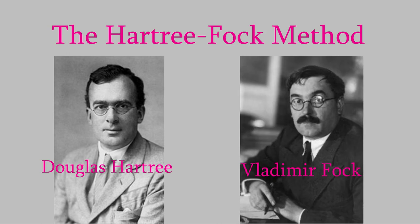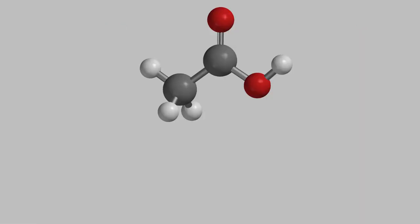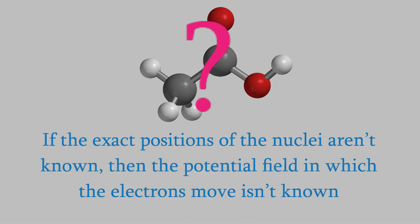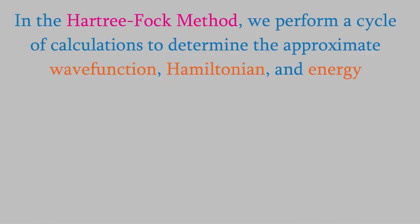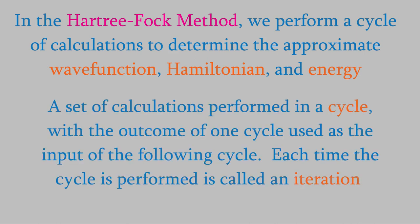Here's how it works. Suppose our system is a molecule, and we don't know the locations of the nuclei in the molecule. In that case, we wouldn't know what the potential field generated by the nuclei is like, and we wouldn't know the potential energy V that the electrons in the molecule would have. The Hartree-Fock method is a technique we can use to calculate the approximate locations of the nuclei, the wave function of the system, the form of the Hamiltonian for the system, and the potential energy.